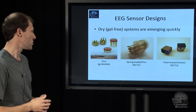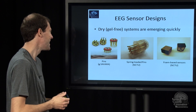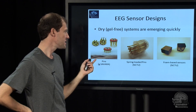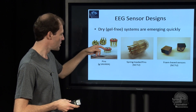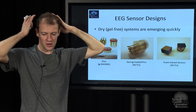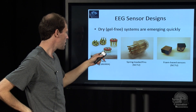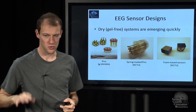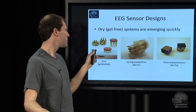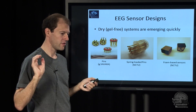There are also so-called dry electrodes. There's a pin-based design — the pins are in the cap and when you put it on, they get through the hair, which is the critical part. They have rounded tips so it doesn't hurt, and they distribute force over multiple pins. Usually it's enough if just one, two, or three of the pins make contact; you don't need all of them.